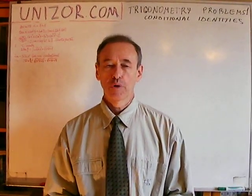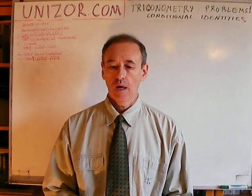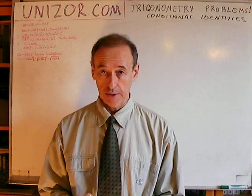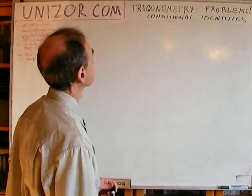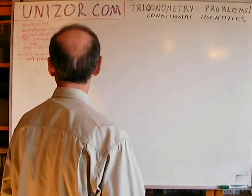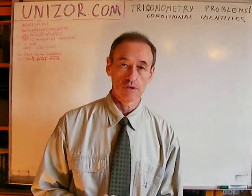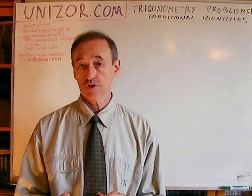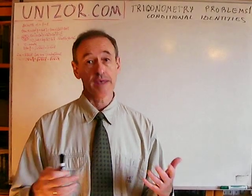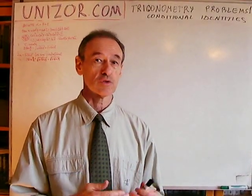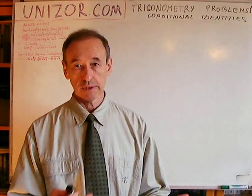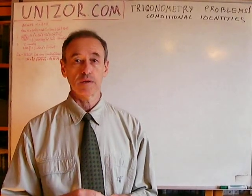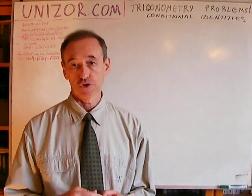Hi, I'm Zor. Welcome to Indizor Education. I would like to present a couple of problems related to conditional trigonometric identities — three problems and a couple of extensions. A conditional trigonometric identity is basically a theorem where there is some condition given to you, usually about angles or some trigonometric functions of these angles, and then another trigonometric equality should be proven.